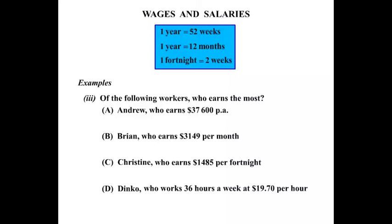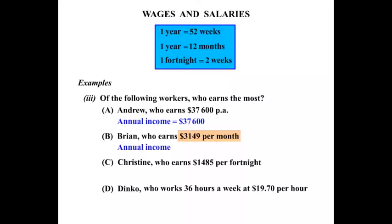We're given the amounts they earn at different rates of time. Looking at the first one, $37,600 per annum — so the annual income is $37,600. We're going to work out the annual income for the other three as well so we can compare properly. Brian's getting $3,149 per month; there are 12 months in the year, so we multiply by 12, and that works out to be $37,788.